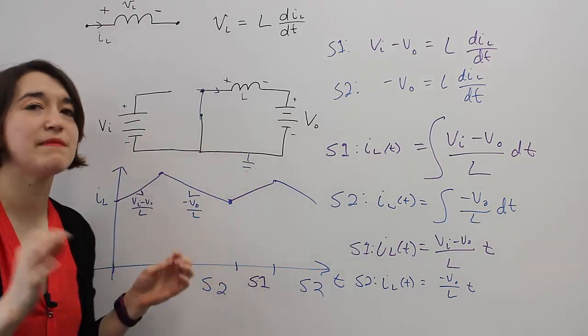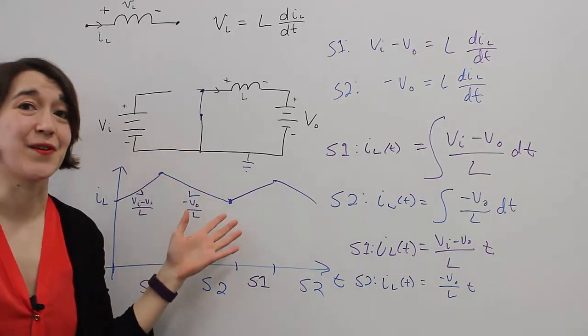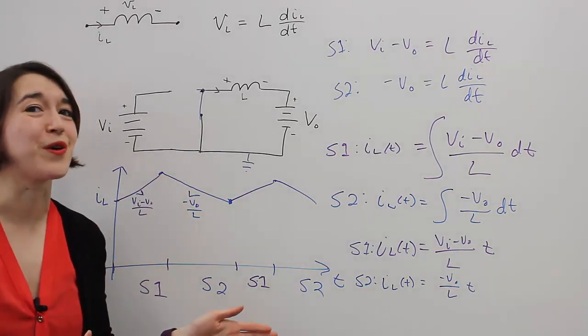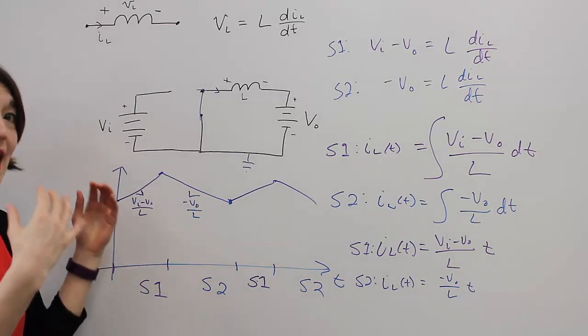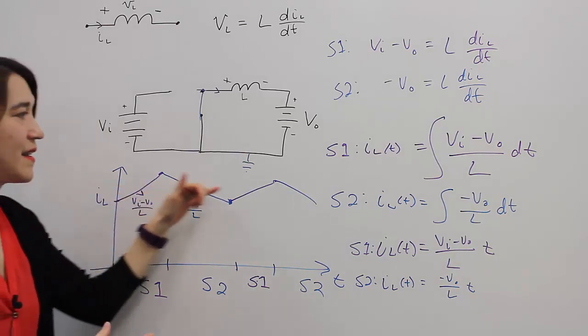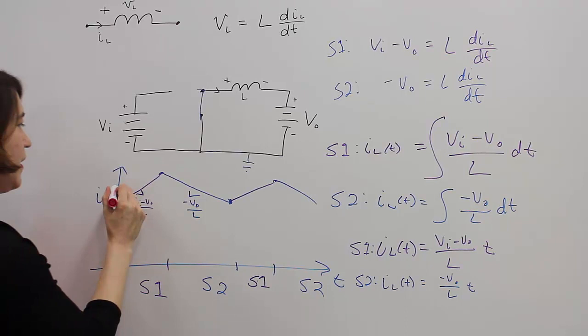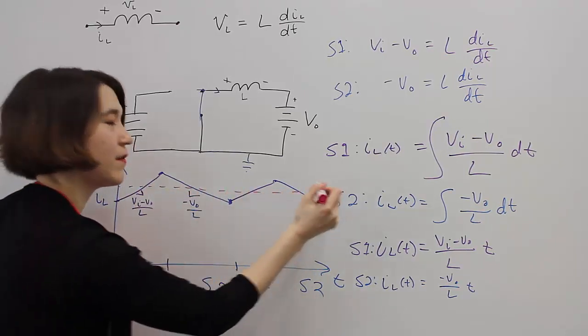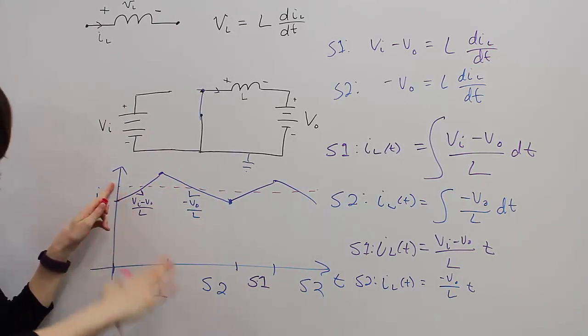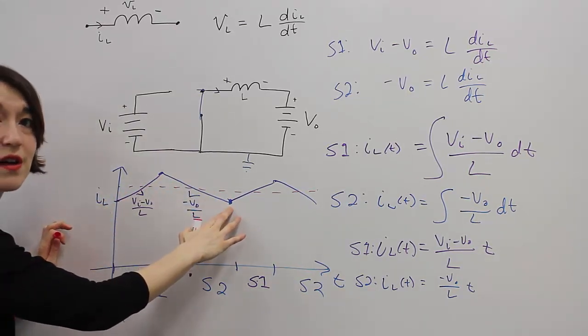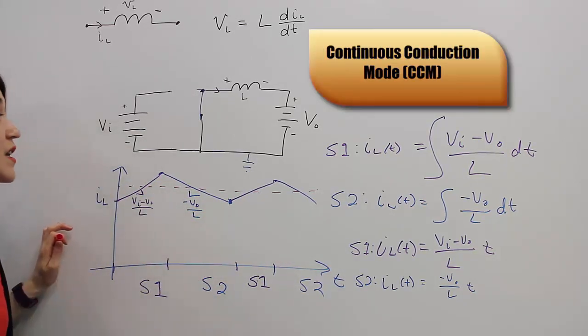And this is the most important waveform in a DC-DC converter. And in my opinion, the most beautiful waveform. This is steady state, meaning that the average values are not changing. And this average current, if you'll notice, is positive and it does not touch zero. When the lowest current in steady state does not touch zero, this is called continuous conduction mode.